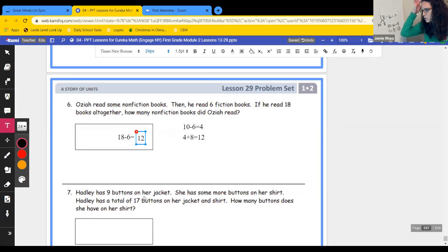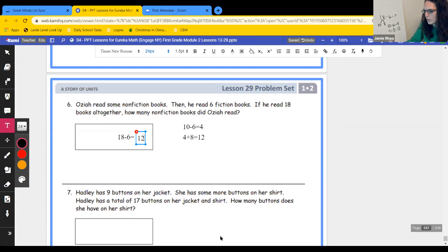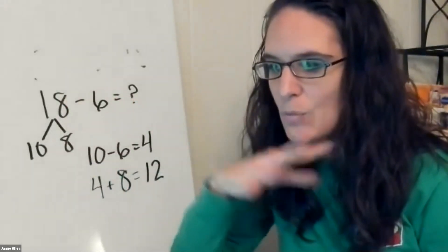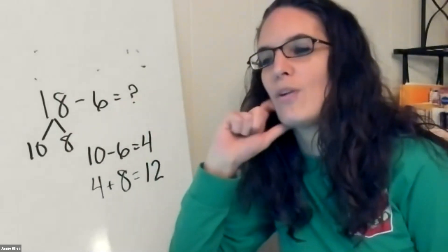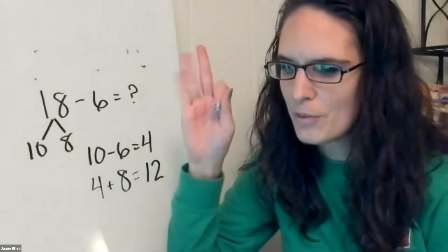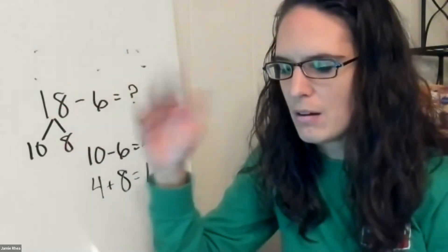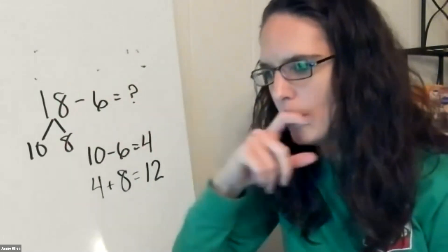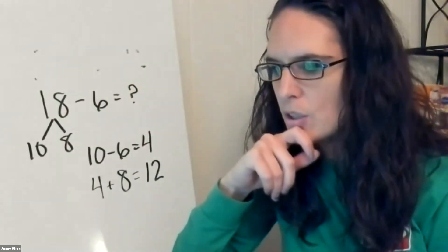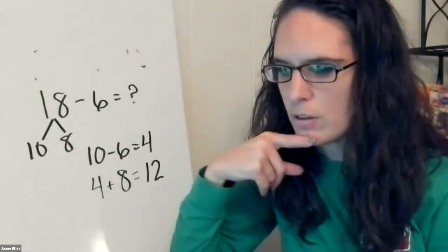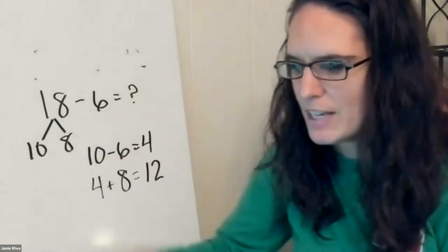You're going to do problems one, five, and seven, just like we talked about in the problem set. Then you're going to do your exit ticket. Once you finish, turn it all in to me, I'll check it, and we will be done with this whole entire module — ready for module three when we come back from break. If you have any questions, email me. Don't leave any assigned problems blank. I will see you guys on the next lesson. Bye, friends.